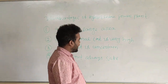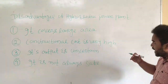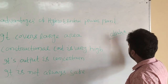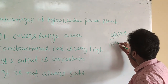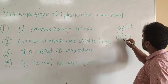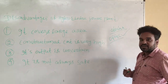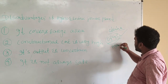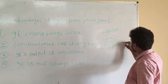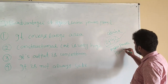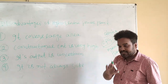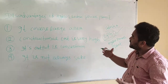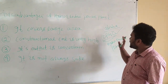These are the disadvantages. As an example of where a hydroelectric power plant is available, you can take Odisha. In Odisha, you will find OPGC — Odisha Power Generation Corporation. There are different hydroelectric power plants in India, but in Odisha you can take this as an example.